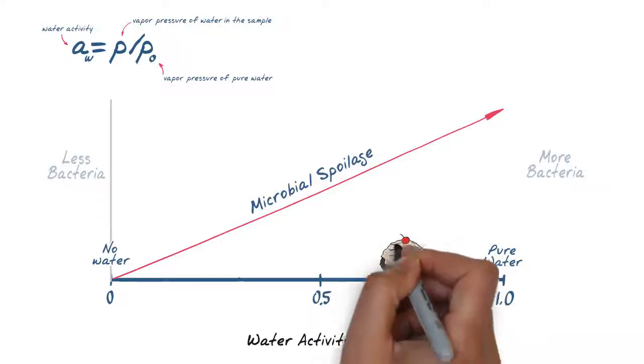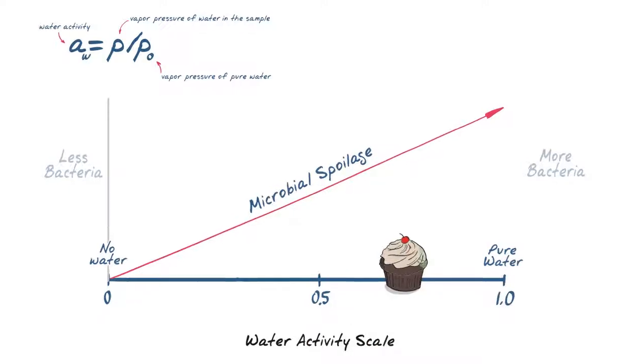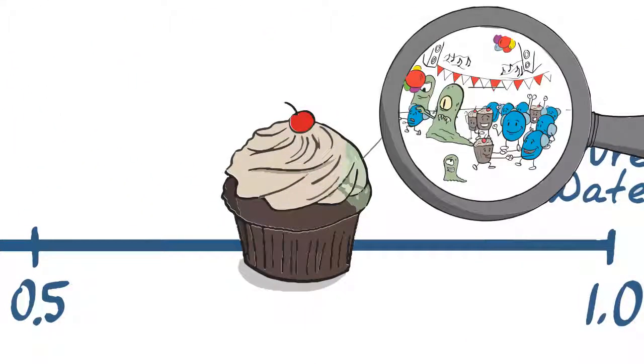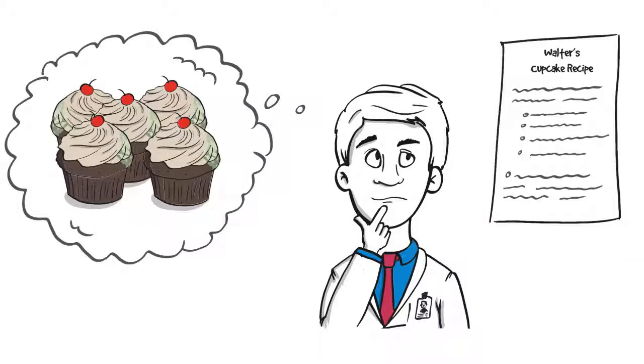In relation to cupcakes, a water activity measurement of 0.5 or lower would mean the likelihood of microbial growth is very low. In Walter's cupcakes, which measured at 0.78 AW, it appears too many water molecules are unbound, facilitating mold growth.